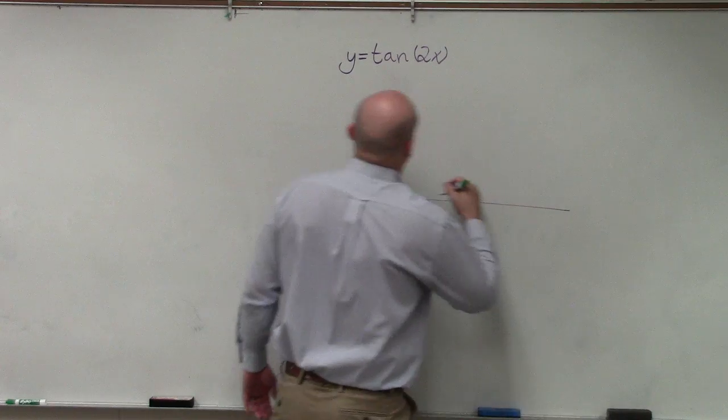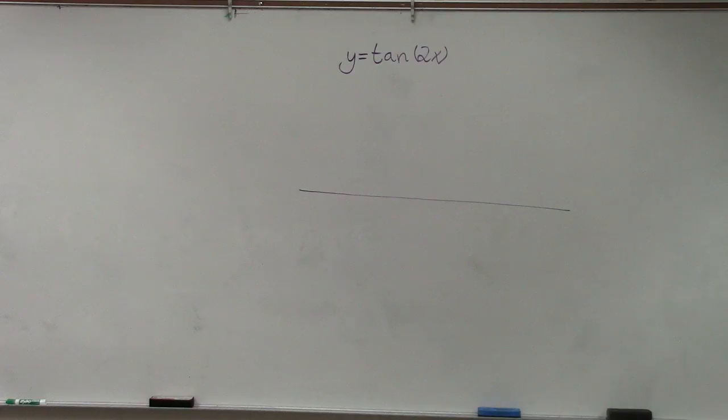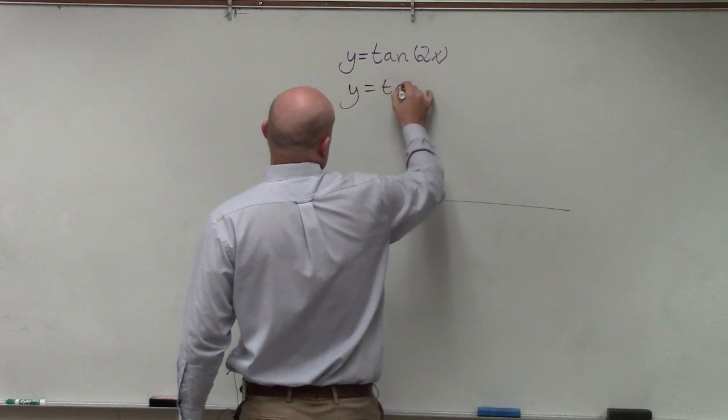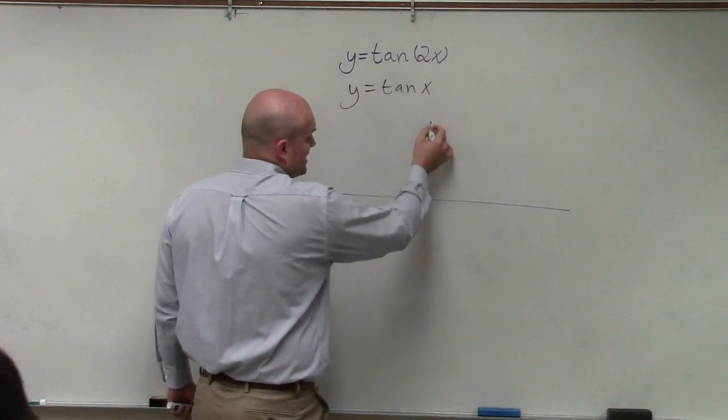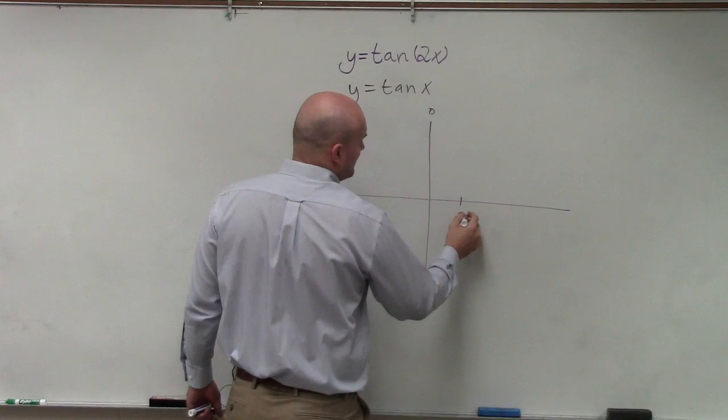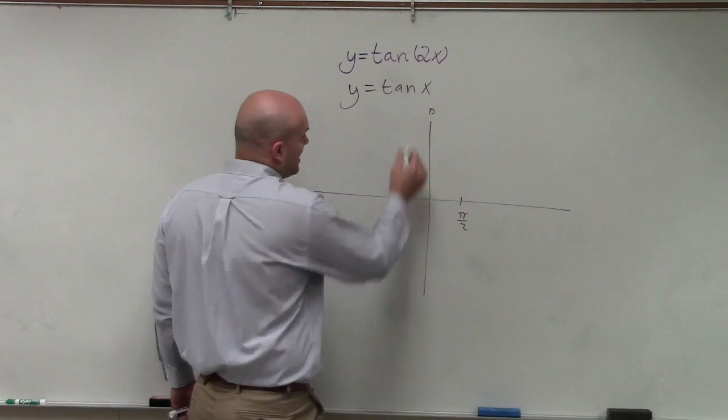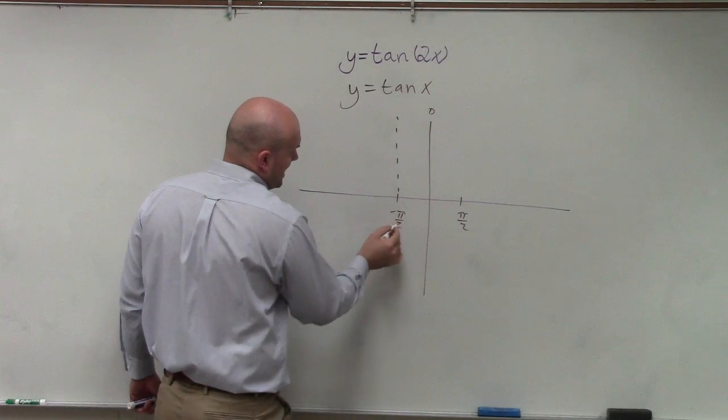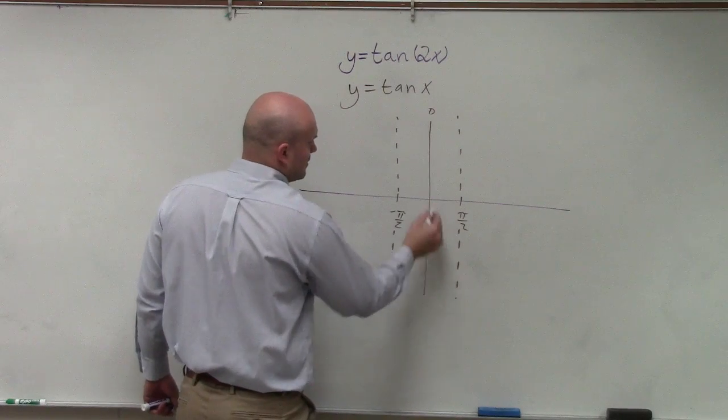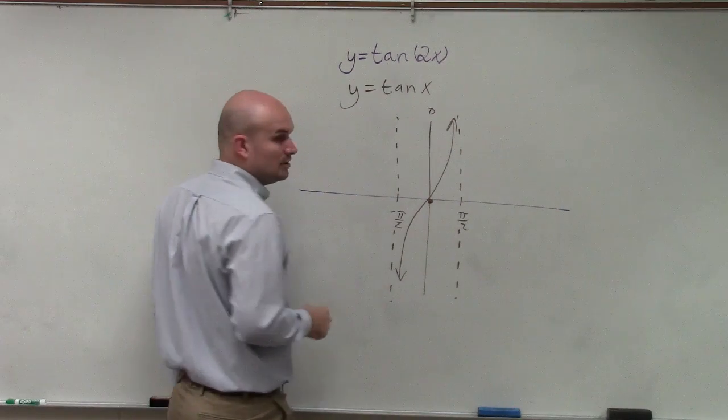Let's do what the parent graph looks like: y equals the tangent of x. So if you remember, the tangent of x, if that was zero, then we went from pi halves to negative pi halves, and those were what we call the asymptotes. Then the graph looked like something like this.